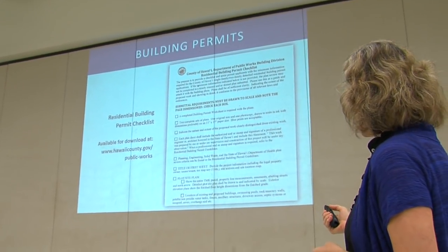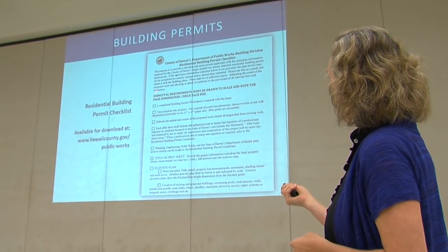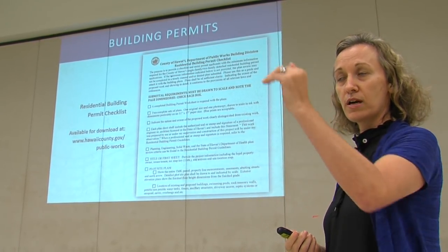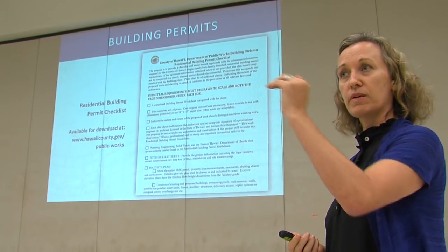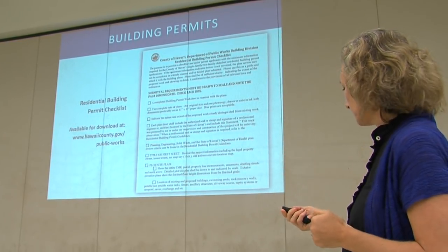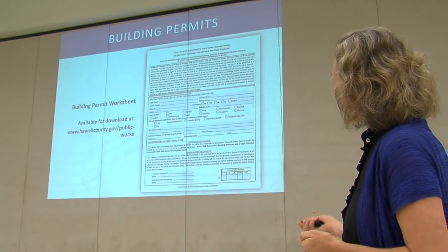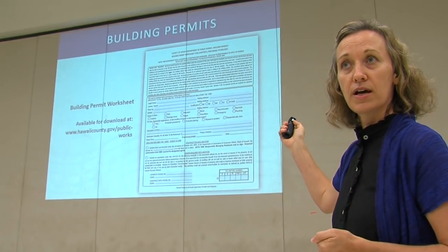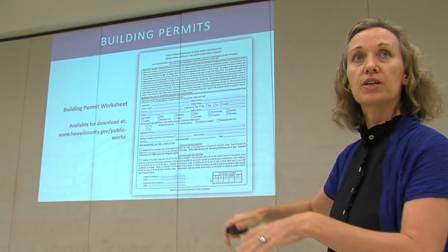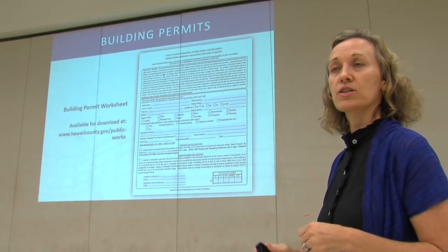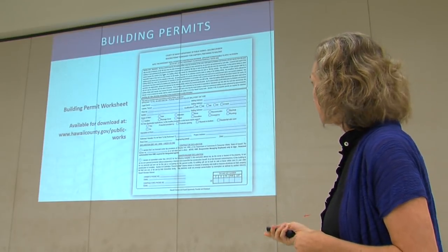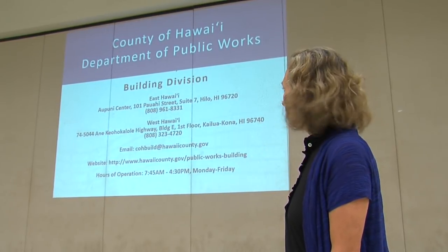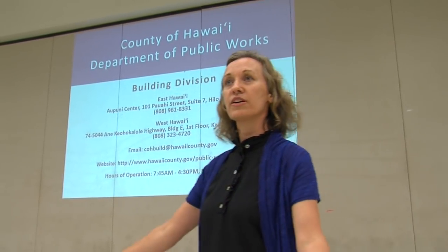This is what the permit checklist looks like — I have a copy here that I can hand out. It helps you go down and check off those boxes to make sure you've completed everything prior to submittal. The Building Permit Worksheet is a one-page document you would fill out and bring in when you actually submit your plans — it's the information you give to the clerk. You can download it and fill it out online, then bring it in when you submit your application. It will make things speedy when you actually come in to submit. We're available for questions now.